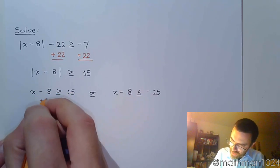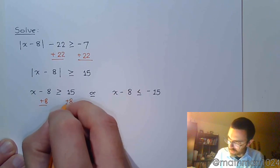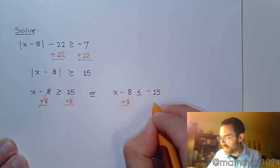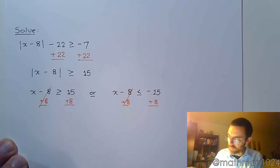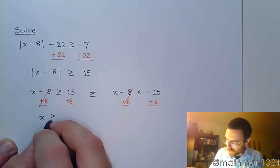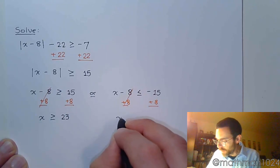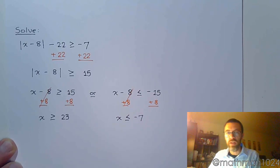So we now add 8 on both sides. And you know what? I've got to do the same thing over here. Add 8 to both sides. And so here, x is greater than or equal to 23 or x is less than or equal to negative 7.